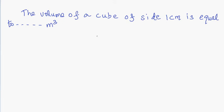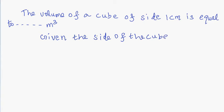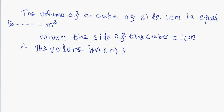Here we have to find out the volume of a cube of side 1 centimeter, expressed in meter cube. Given the side of the cube is equal to 1 centimeter, the volume in centimeter scale is equal to 1 centimeter cube.